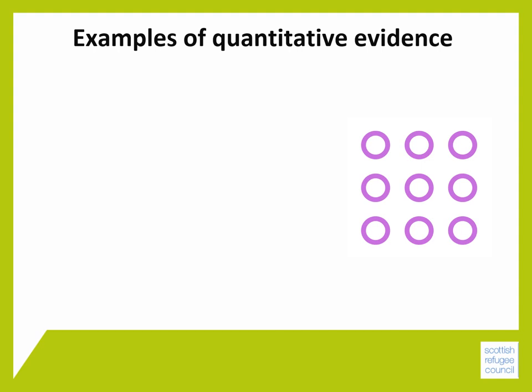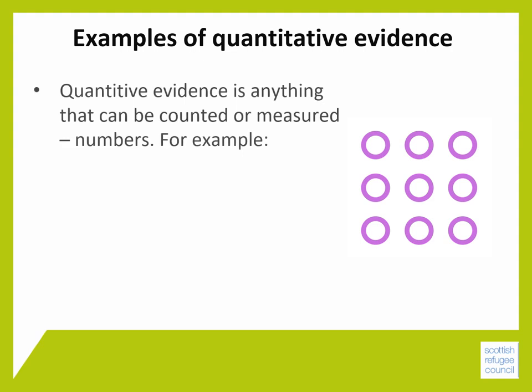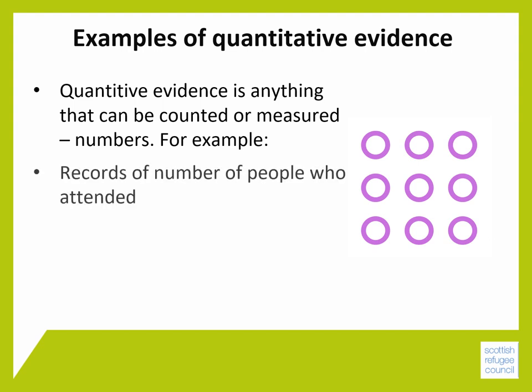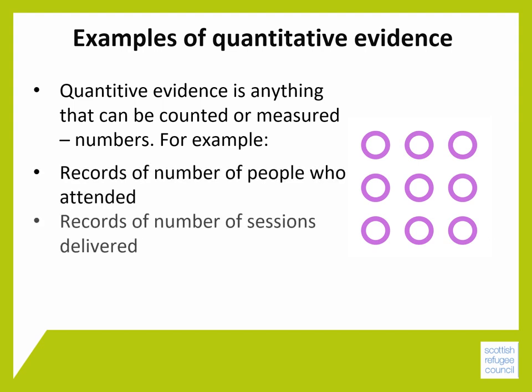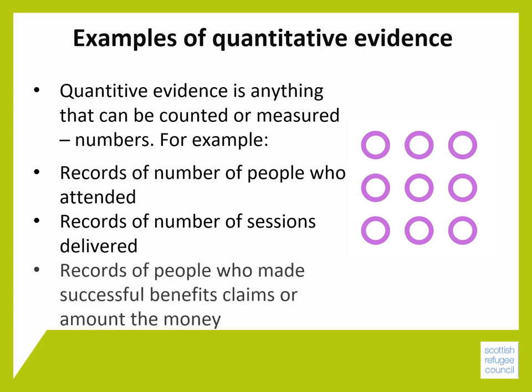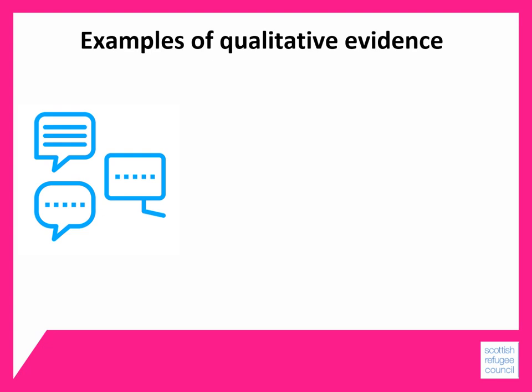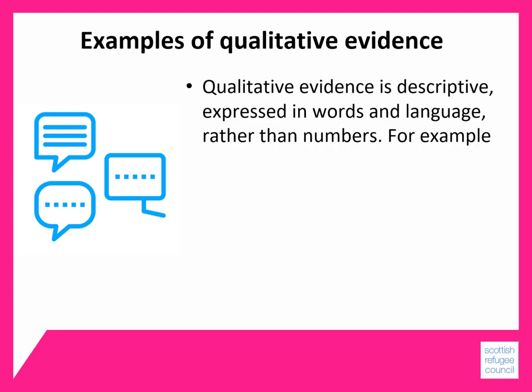Let's think firstly about quantitative evidence. Quantitative evidence is anything that can be counted or measured. For example, you may keep a spreadsheet or database to record the number of people who attended your sessions or the number of sessions you delivered. If you were supporting people to access benefits, you could count how many people you helped to make successful benefit claims or the amount of money you managed to help them access. This kind of evidence is all about numbers.